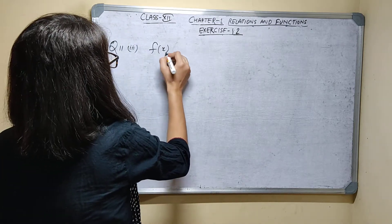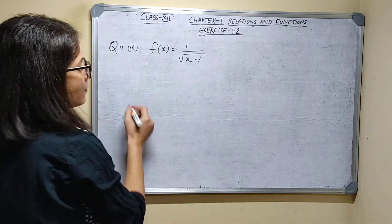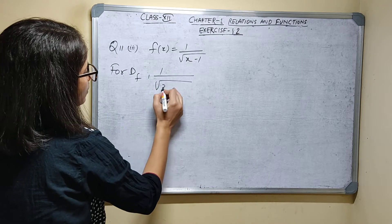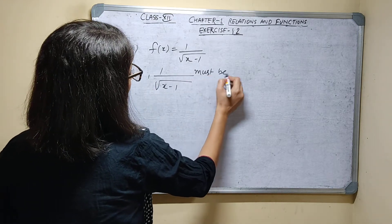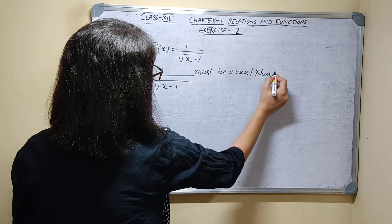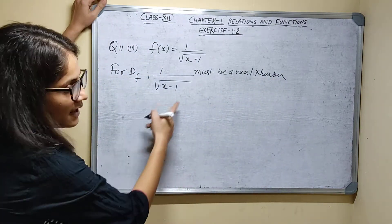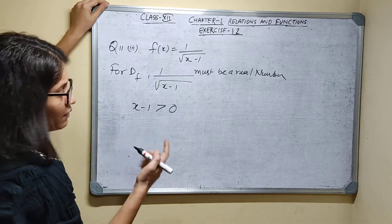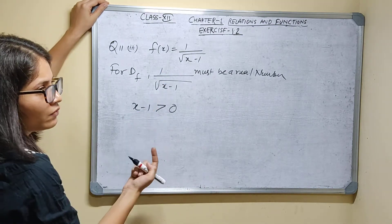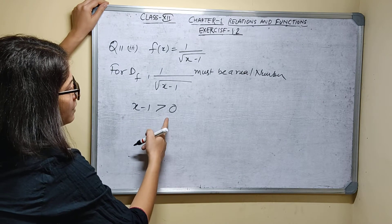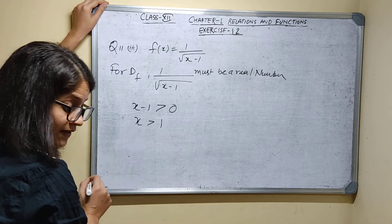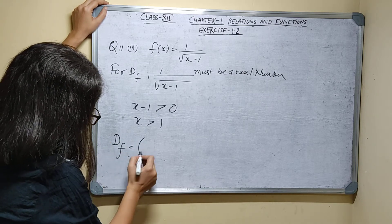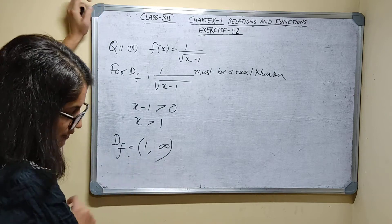Third part: f(x) is equal to 1 upon root of x minus 1. For domain of a function, f(x) must be a real number, so 1 upon root of x minus 1 must be a real number. Since it is in the denominator, x minus 1 cannot be equal to 0 — if it equals 0, then 1 upon 0 is undefined. So x minus 1 must be greater than 0, meaning x is greater than 1. Domain of function is (1, infinity).